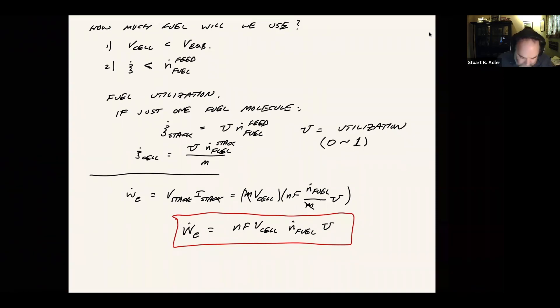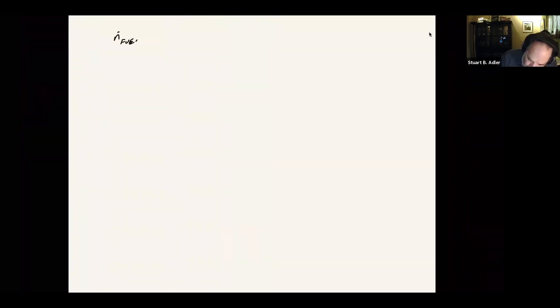So flipping this around and thinking about how much fuel we're going to use by our real system. The N dot of fuel that we're feeding, this is going to be our electrical work divided by NF V cell times the utilization. Just inverting that equation.